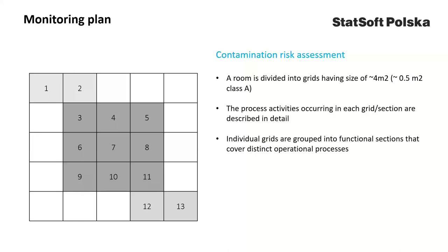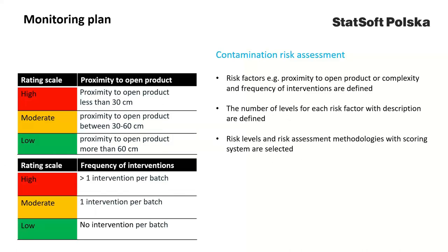Individual grids can be grouped into functional sections that cover distinct operational processes, such as in-feed, filling, or closing. In the next step, we determine the contamination risk factors, such as distance from the open product, or complexity and frequency of interventions. For each factor, the number of levels is defined with a description, and the method of risk estimation is selected, which can be additive by summing the risk factors, multiplicative by multiplying the factors, or a method of risk sorting and filtering. Then a scoring system should be defined to differentiate between high, moderate, and low risk of contamination.